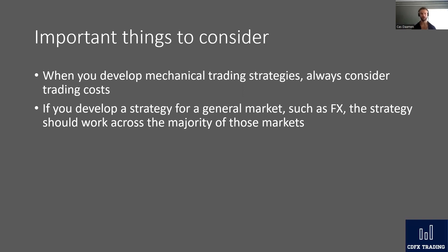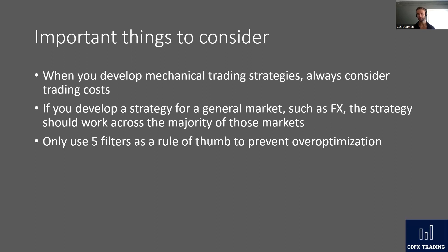If you develop a strategy for a general market like forex, it should work across the majority of those markets. If you test 10 forex pairs and it only works on 3, that's probably not a robust edge. If you test 20 markets and it works on 10 to 15 with the others near breakeven, that's acceptable. The same principle applies to indices — if it works in the S&P but fails in the DAX, NASDAQ, and Russell, the edge probably isn't real.